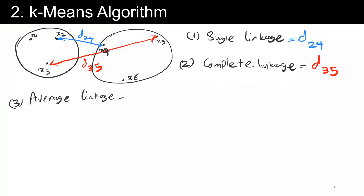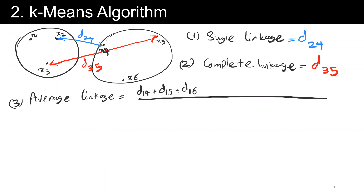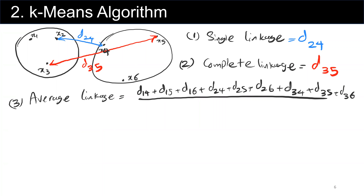For average linkage, we calculate all pairs: d from x sub 1 to x sub 4, plus d from x sub 1 to x sub 5, plus d from x sub 1 to x sub 6, and we do the same for all others — 2 to 4, 2 to 5, 2 to 6, and 3 to 4, 3 to 5, and 3 to 6. We have 9 of them, so we divide by 9. This is called average linkage.